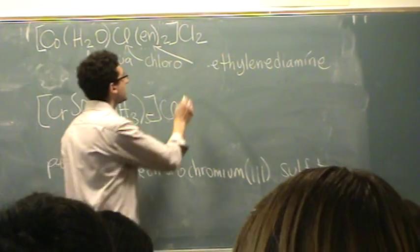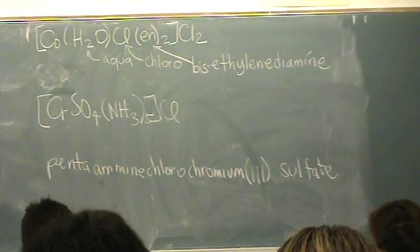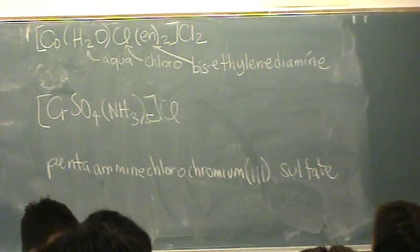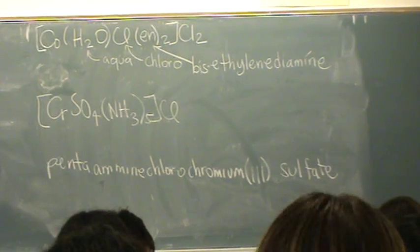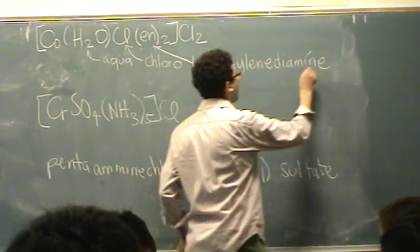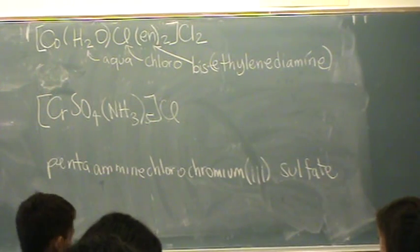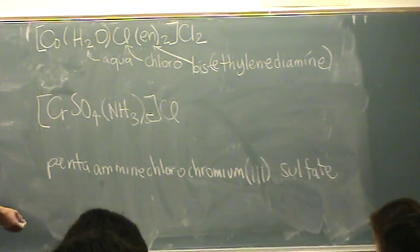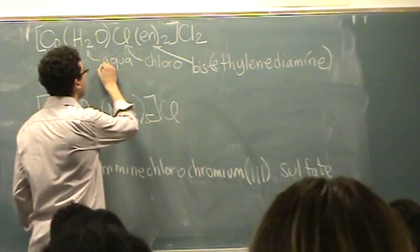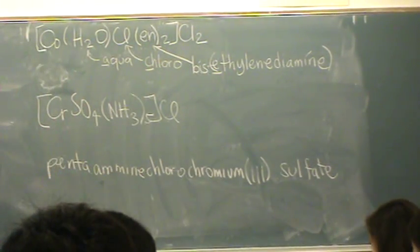So it ends in 'is' — I know, it makes no sense. So this is bis(ethylenediamine). We don't use di, not dis, but bis(ethylenediamine). And then we'll put this in brackets. Bis meaning two. In alphabetical order: A, C, E.